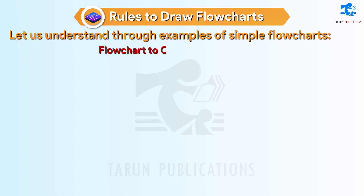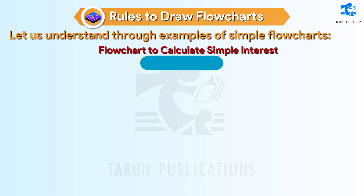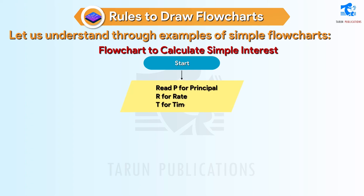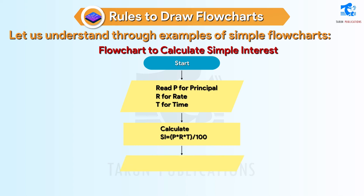Flowchart to calculate simple interest. Start. Read P for principal, R for rate, T for time. Calculate C = P * R * T / 100. Print C. Stop.